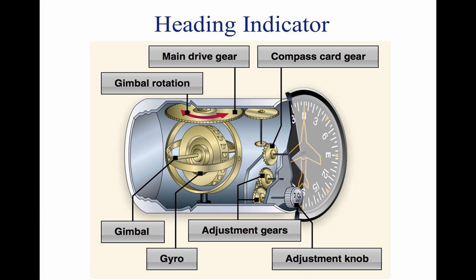Because of the precession caused by friction, the heading indicator creeps or drifts from a heading to which it is set. Another error in the heading indicator is caused by the fact that the gyro is oriented in space, and the Earth rotates in space at a rate of 15 degrees in one hour. Thus, discounting precession caused by friction, the heading indicator may indicate as much as a 15 degree error per every hour of operation.